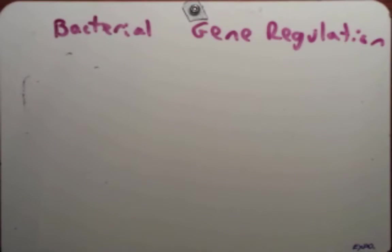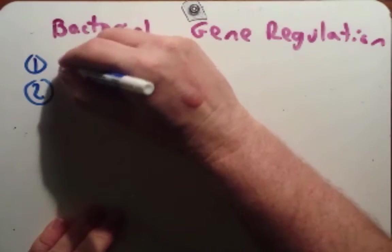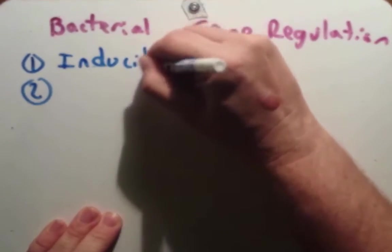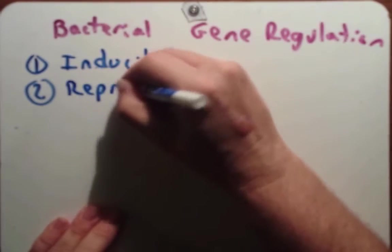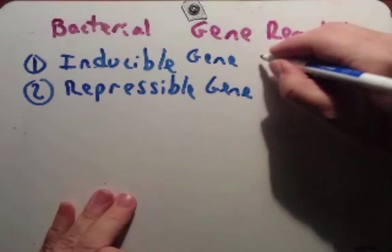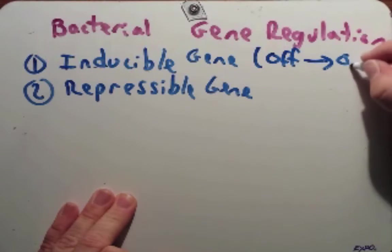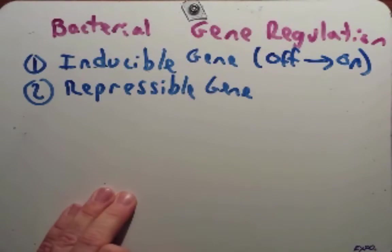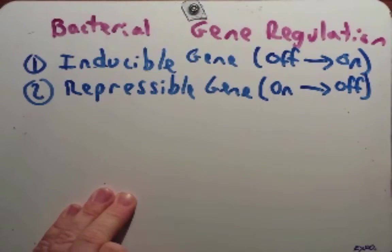Your book describes four different ways, in a very general sense, of how genes can be regulated. A gene can either be an inducible gene or a repressible gene. An inducible gene is a gene that is normally off, but it can be turned on — it can be induced. A repressible gene is a gene that is usually on but it can be turned off; that is, it can be repressed.